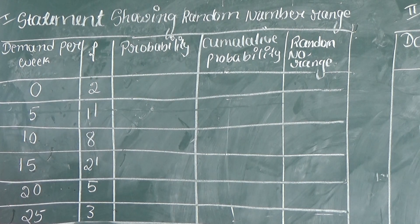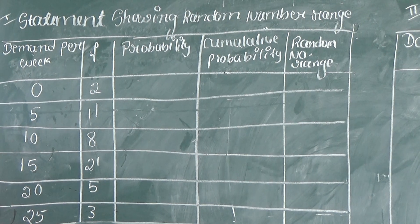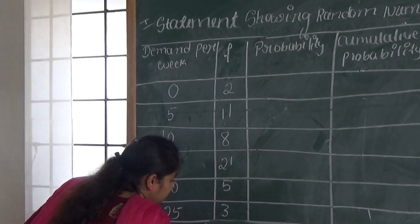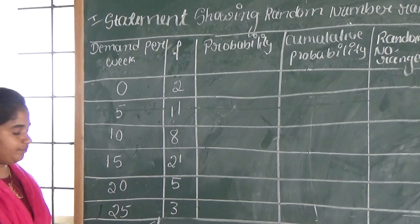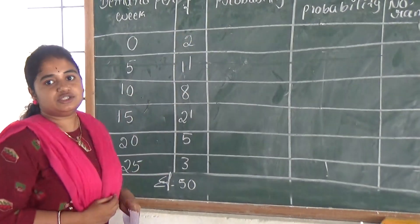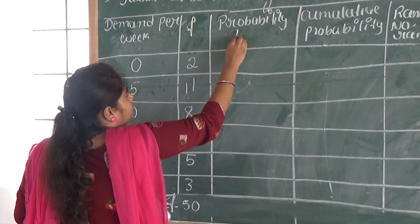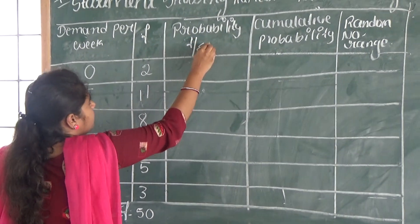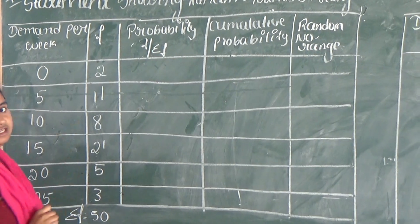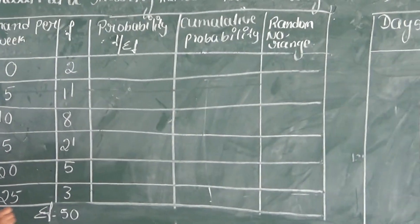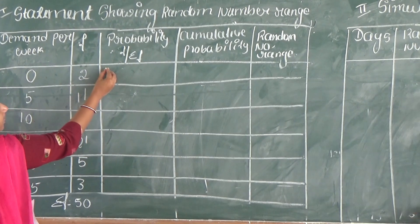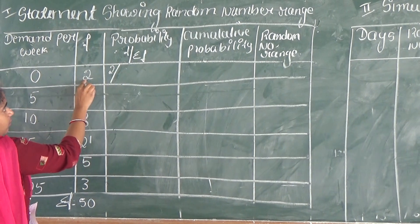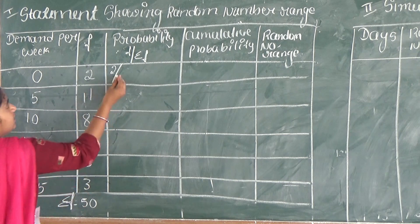You already know the formula of probability: the favorable outcome divided by the total outcome. So here, first we have to sum up this frequency. The total value is 50. The formula for the calculation of probability is frequency divided by sigma f. Sigma f is the total outcomes, and frequency is the favorable outcomes.